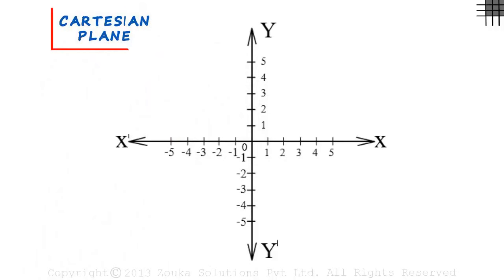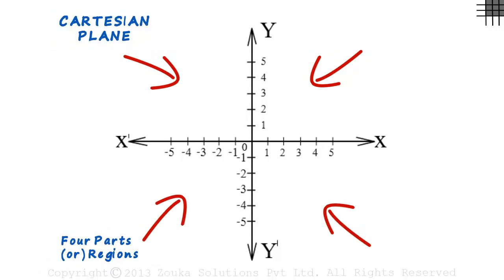As we can see, the Cartesian plane is divided into four parts or regions. This one, this one, this one and this one. Each of them is called a quadrant.